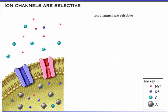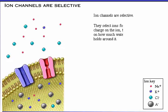Ion channels are selective — they allow some ions to pass through and prevent the passage of others. Channel selectivity depends on the charge on the ion, that is, whether it is positive or negative, on the size of the ion, and on how much water the ion attracts and holds around it.